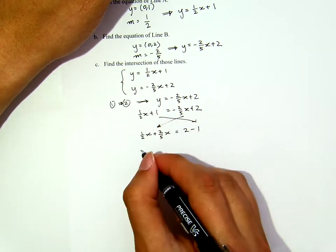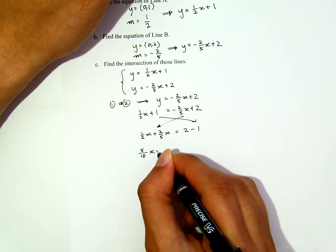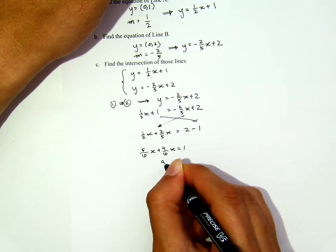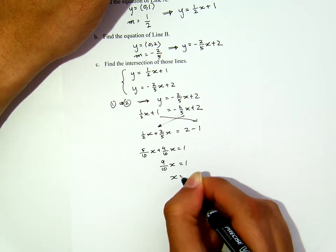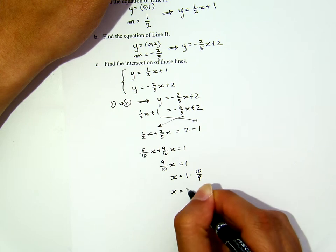To add these like terms, I need common denominator. Five over ten x plus four over ten x equals to 1. So, nine over ten x equals to 1, x equals to 1 times ten over nine, which is ten over nine.